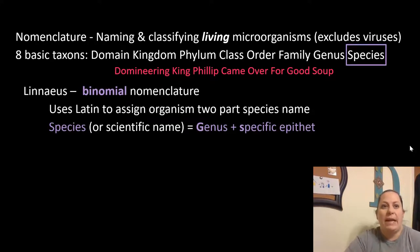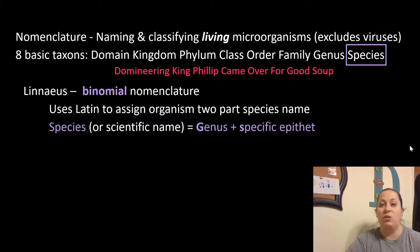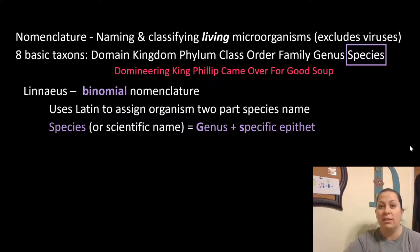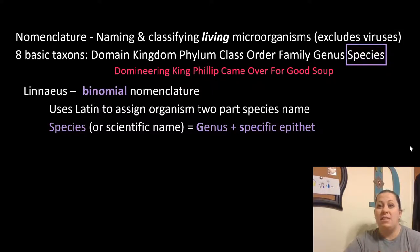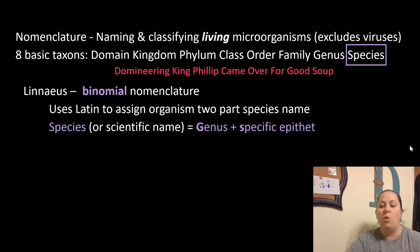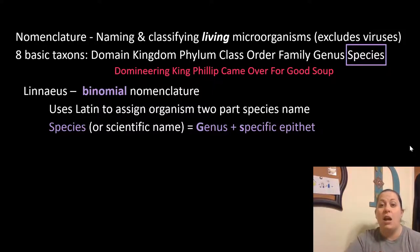Linnaeus gets credit for developing binomial nomenclature, which we use today. This uses Latin as its language to assign organisms a two-part name — that's where the 'binomial' comes in. The species name or scientific name is composed of the genus plus a specific epithet. The specific epithet normally describes that particular organism. Latin is used because it's considered a dead language — it's not changing — so it allows us to use it as a standardized system around the world.